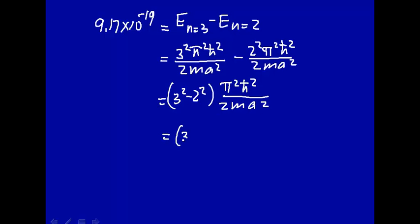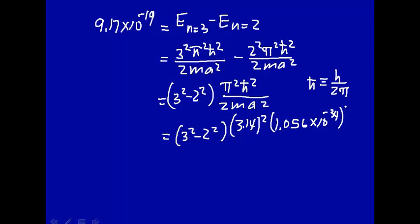Let's go ahead and put some numbers in. 3 squared minus 2 squared, pi is 3.14 squared. h-bar, remember h-bar is defined as h over 2pi, and that is 1.056 times 10 to the minus 34th squared, divided by—what's the mass? That's the mass of the particle, which is an electron. This is 2 times the mass of the electron, 9.1 times 10 to the minus 31, a kilogram, SI unit, times A squared. And that's equal to 9.17 times 10 to the minus 19th.